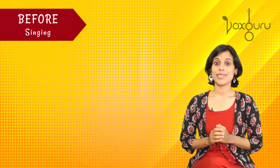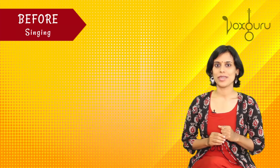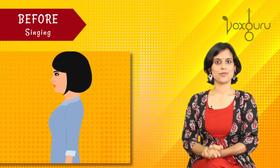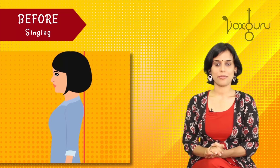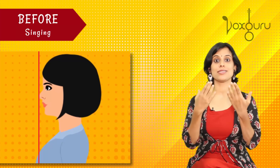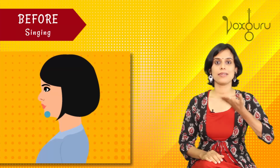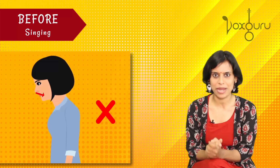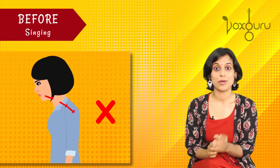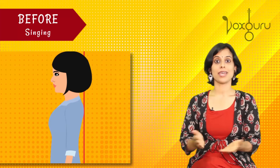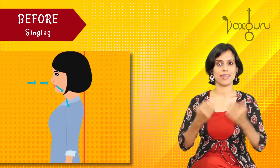Let's start with before singing. Now, before singing, the main thing you have to control is your posture. So make sure you sit upright or stand upright where your shoulders are nice and relaxed and your face is straight, with your chin parallel to the floor. You should not be slouching or bending too much because that will obstruct the flow of air. Only if you are upright will the air flow smoothly in and out.